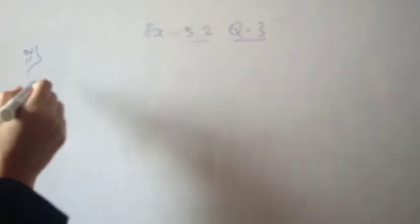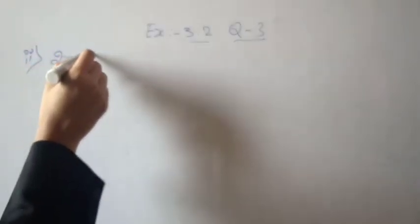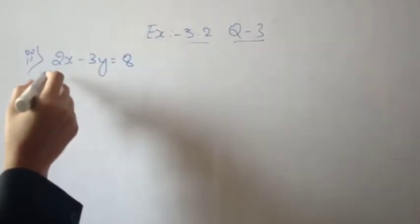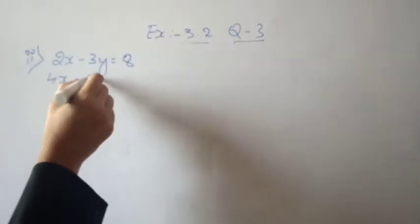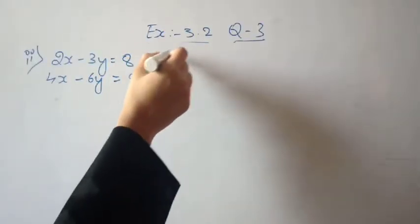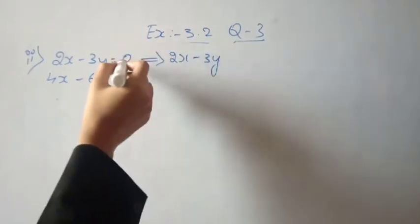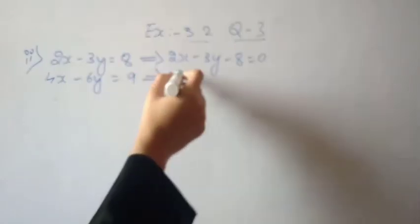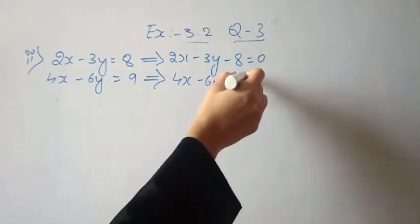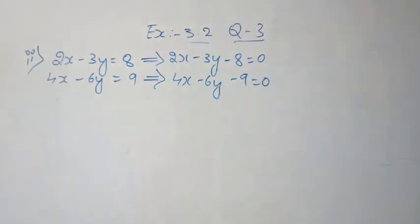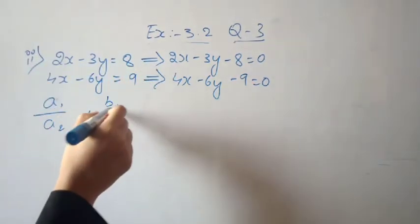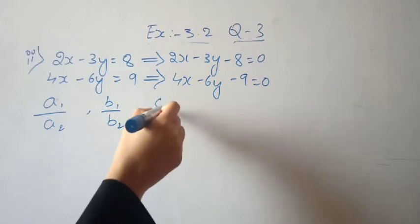Next question — Exercise 3.2, question number 3, second question. The second pair of equations is 2x minus 3y is equal to 8, and 4x minus 6y is equal to 9. Moving terms to the left side with sign change: 2x minus 3y minus 8 equals 0, and 4x minus 6y minus 9 equals 0. Now compare a1, b1, c1 and a2, b2, c2. So a1/a2, b1/b2, and c1/c2.